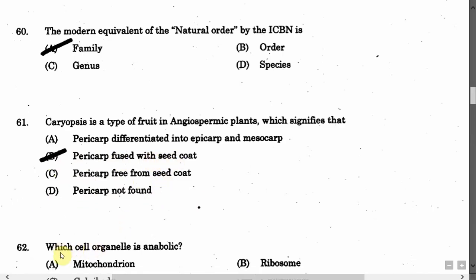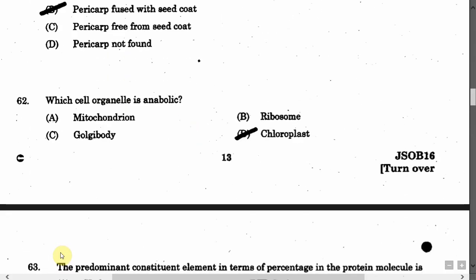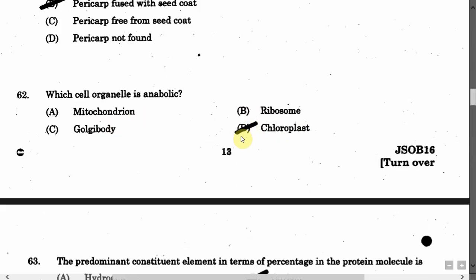The next question is: Which cell organelle is anabolic? Option A: Mitochondrion. Option B: Ribosomes. Option C: Golgi bodies. Option D: Chloroplast. The correct answer is Option B, that is Chloroplast.